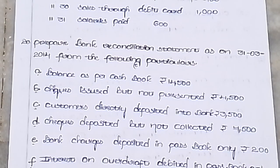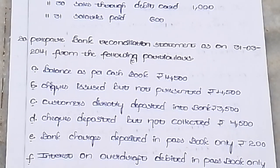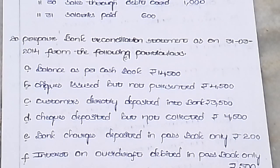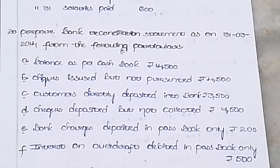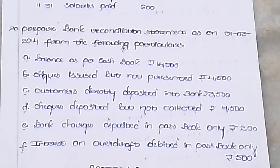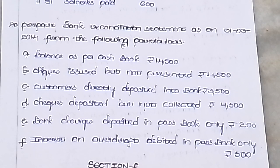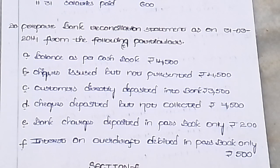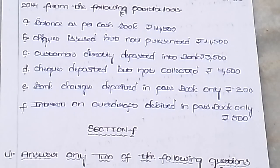Prepare a Bank Reconciliation Statement as on 31st from the following particulars: balance as per cash book 14,000; cheques issued but not presented for payment 4,500; customer directly deposited into bank 3,500; cheques deposited but not collected 4,250; bank charges debited in passbook only; interest on overdraft debited in passbook only 500.